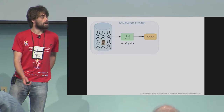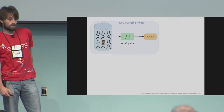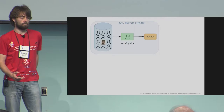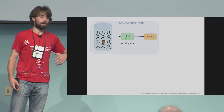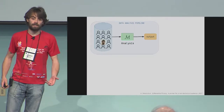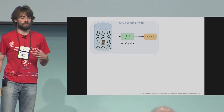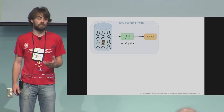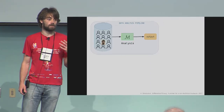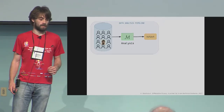In differential privacy, we have a database which has people's data in it and we're going to perform some analysis. The property that we want is that the output shouldn't tell you too much about any one person in the database.